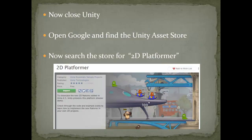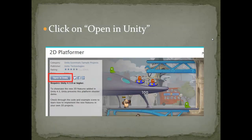Go to the Unity Asset Store. If you can't find the button, open Google and search Unity Asset Store. You're going to search the store for 2D Platformer. You want to see a big spaceship in the middle, a little bean dude with some aliens, and it says 2D Platformer.